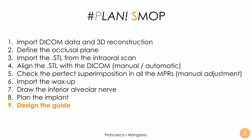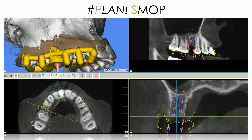We will talk about the design of the surgical guide in particular in this lecture. The guides designed in SMOP are peculiar because they are open-frame guides — tooth-supported, based on clamps that embrace the structure of the teeth. We can regulate the undercuts very well using the powerful tools in the software, in order to achieve perfect stability of the guide on the model and intraorally, and we have the sleeve as well.